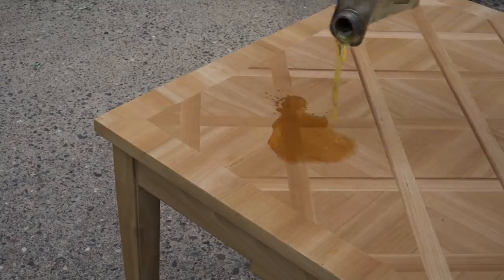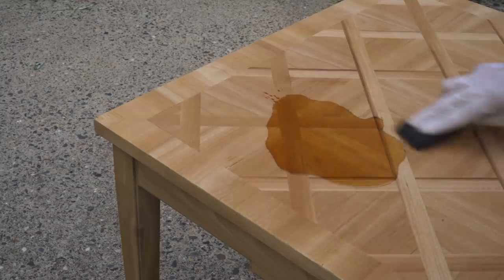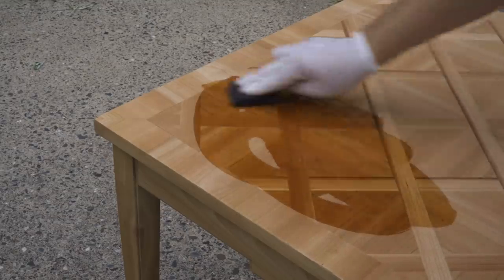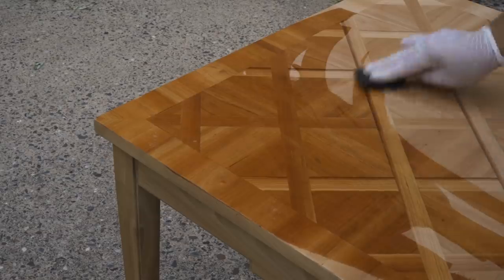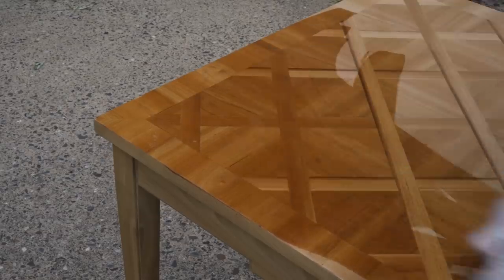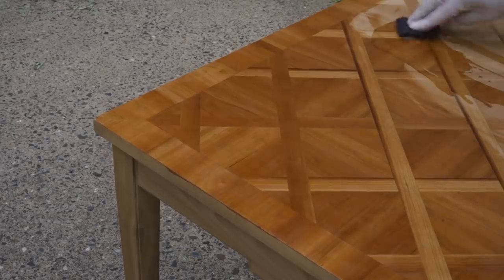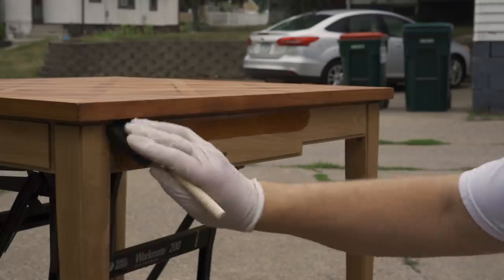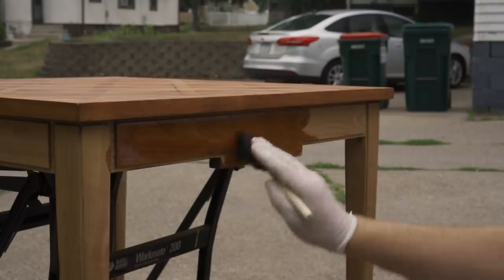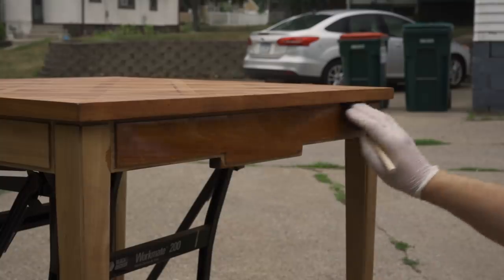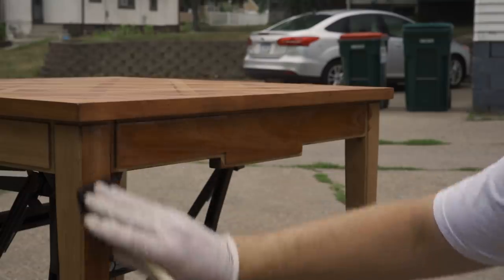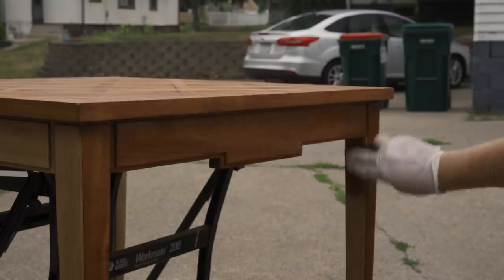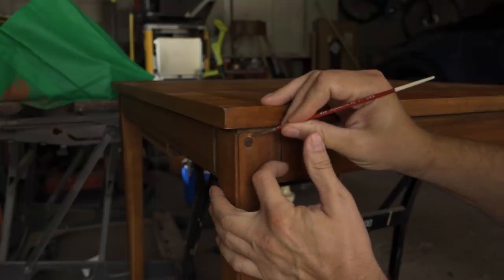Then I was ready to start applying finish. I started with a clear Danish oil. I decided I didn't need any stain on this. As you can see it's got a rich deep color all on its own.